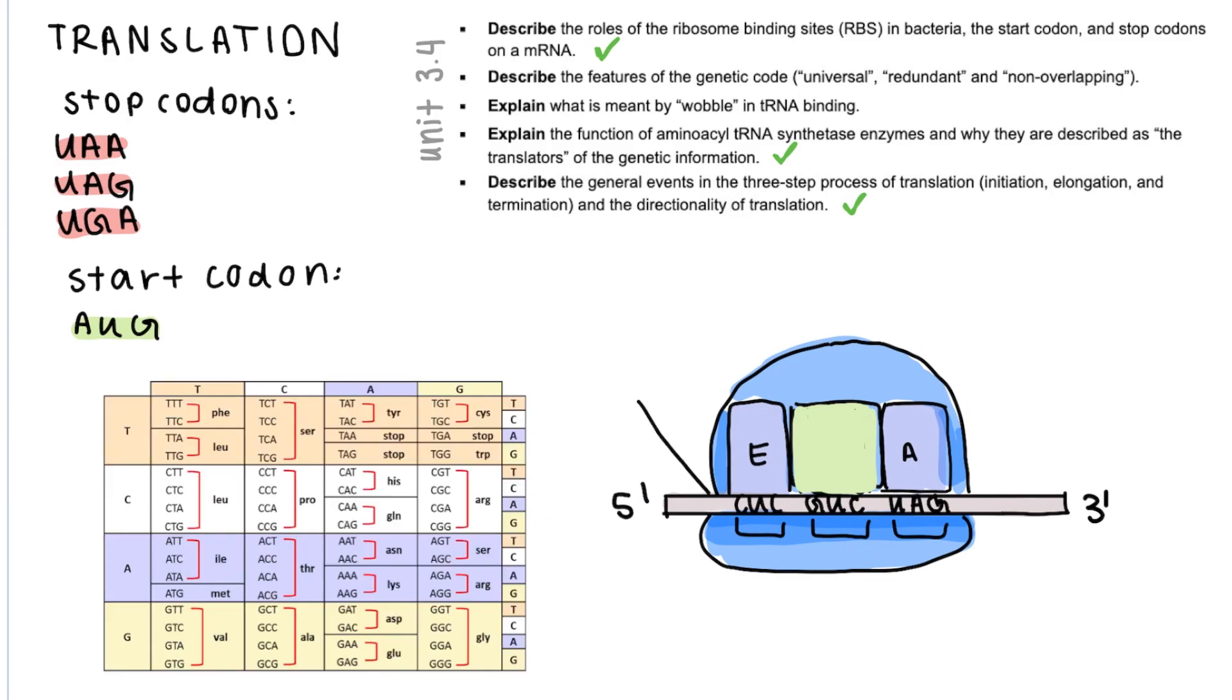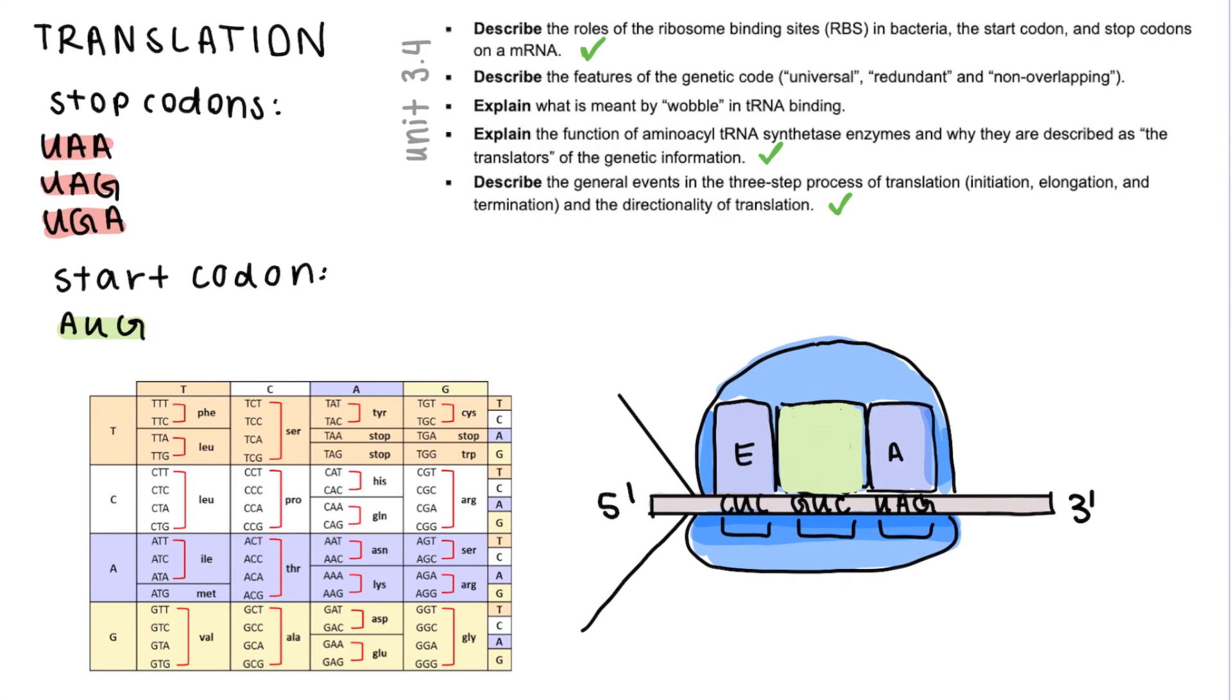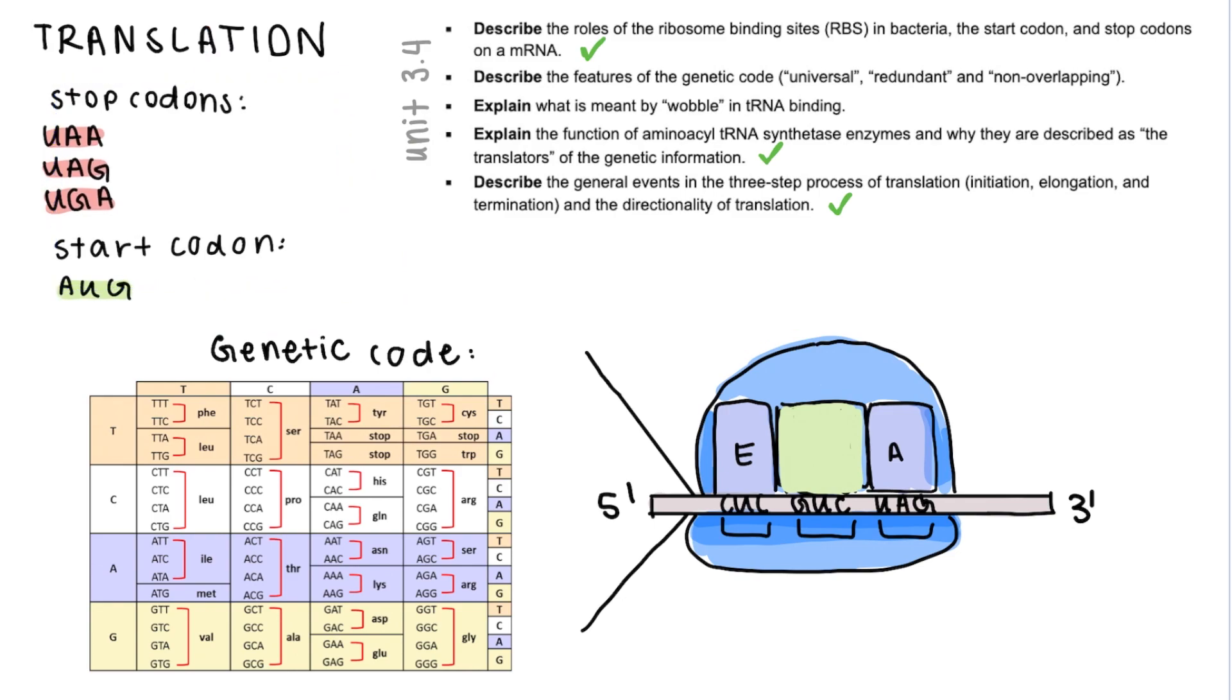Now we will talk a bit more about which codons correspond to which amino acids and how that is dictated. So it's basically dictated by the genetic code which is basically this table that will be given to you in any exam. The genetic code has some special characteristics that make it very unique. First of all it's universal, which means that every organism on earth uses this genetic code for protein production.